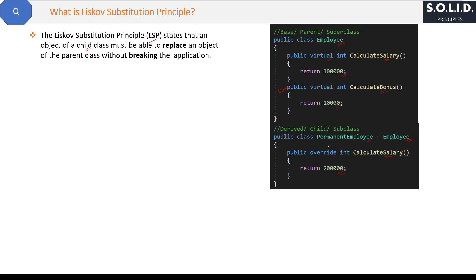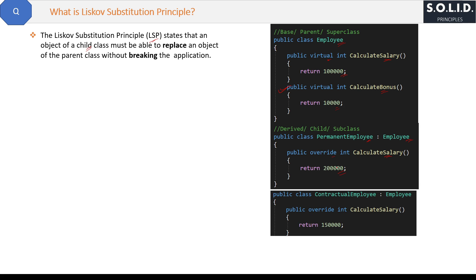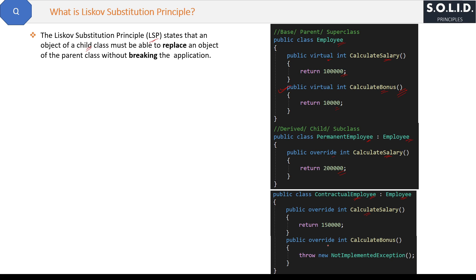Now we have one more class, ContractualEmployee, which is again derived from the Employee base class. Here we will again override the calculateSalary method of the base class. But this ContractualEmployee class is not supposed to have the calculateBonus method of the base class, because bonus is not applicable for contractual employees. Therefore, we have to override the calculateBonus method and throw an error.